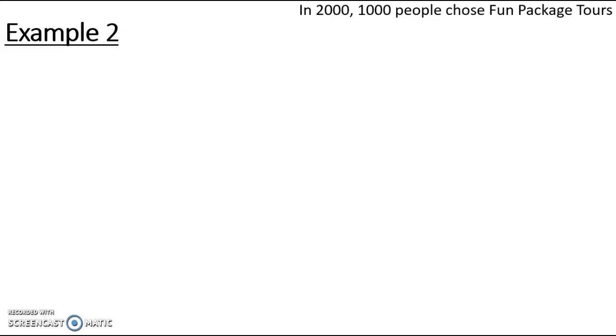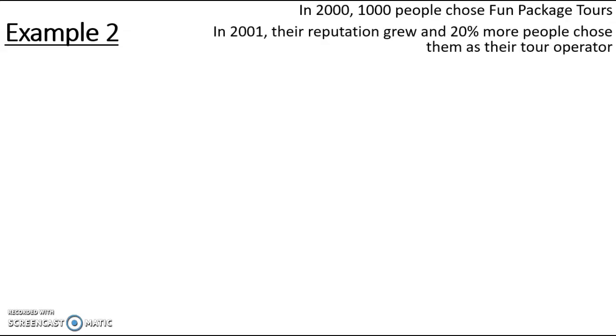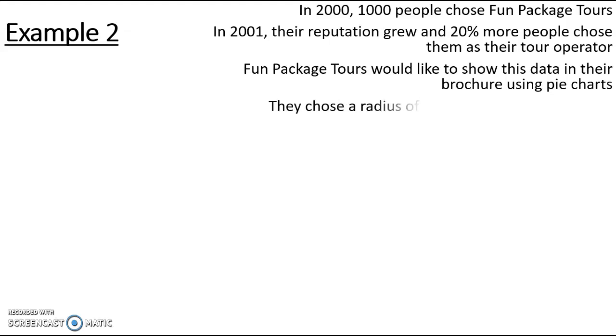In 2000, 1,000 people chose Fun Package Tours. In 2001, their reputation grew and 20% more people chose them as their tour operator. Fun Package Tours would like to show this data in their brochure using pie charts. They choose a radius of 3 centimeters for their 2000 pie chart.